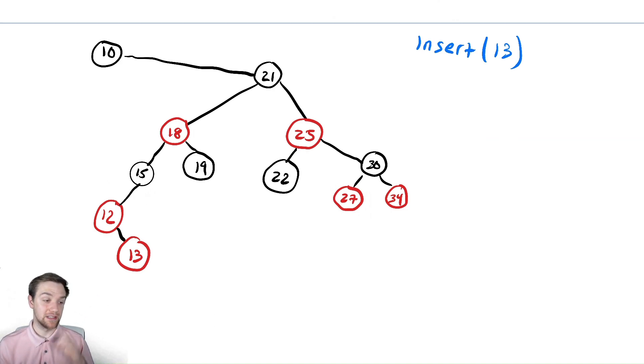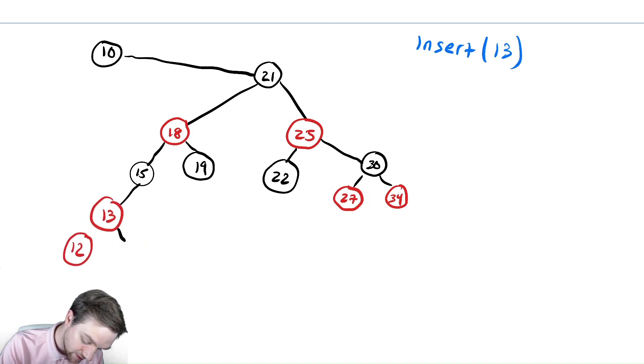Step one was left rotate on 12. If I do a left rotation on 12, it drops down here. 13 gets promoted up there. And then I need to draw in the correct edge between them. So I do my left rotation.